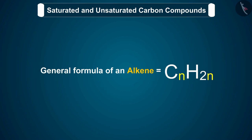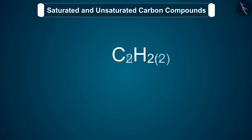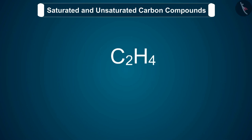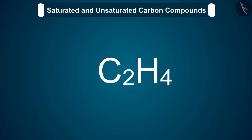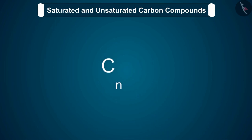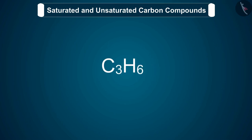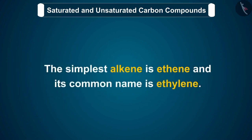The general formula of an alkene is CnH2n, where n is the number of carbon atoms. For example, if an alkene has two carbon atoms, then n equals 2 and its molecular formula will be C2H4. Similarly, when n equals 3, we get propene. The simplest alkene is ethene, whose common name is ethylene.